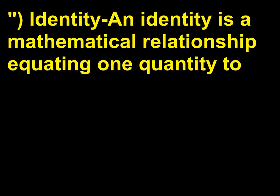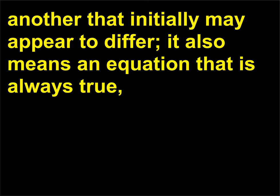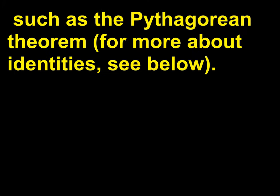An identity is a mathematical relationship equating one quantity to another that initially may appear to differ; it also means an equation that is always true, such as the Pythagorean theorem. For more about identities, see below.